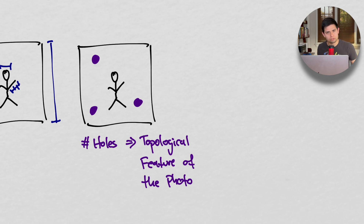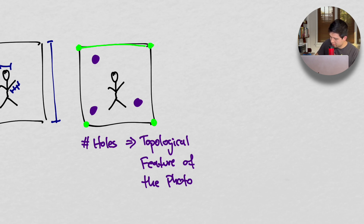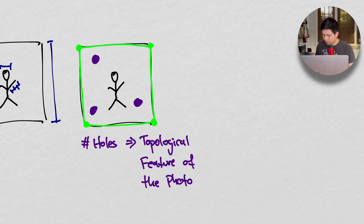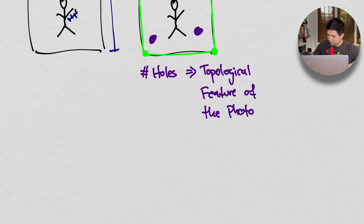Let's think of some other topological features of the photo. How about the number of edges? The number of vertices — that's a topological feature of the photo. The number of sides as well is a topological feature. So topology really is not difficult to understand; it's just a new way of thinking about things. Now let's take a look at another sort of thought experiment.